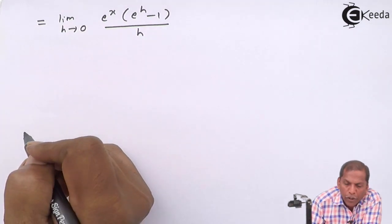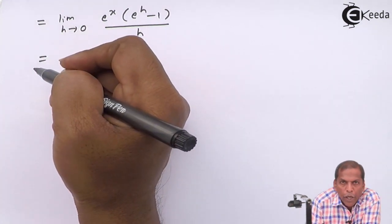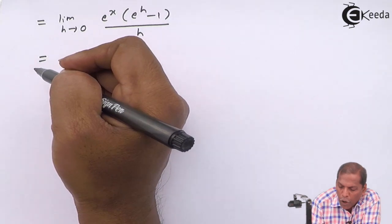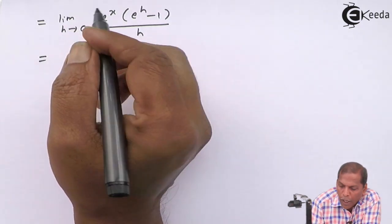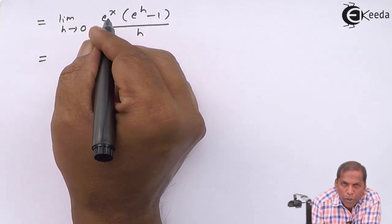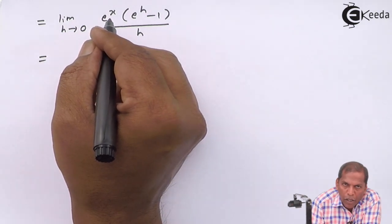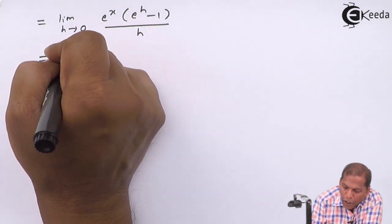Now here the limit depends on h, so according to that limit, e raise x is a constant term, so it can be taken outside the limit. So the next step will be...